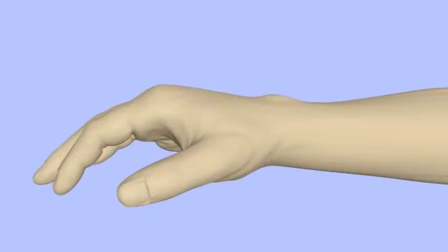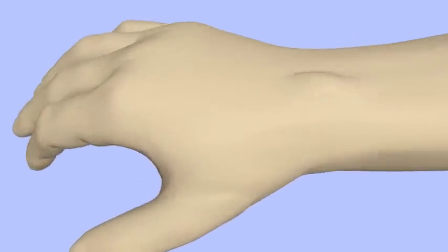Ganglion cysts are fluid-filled masses that can occur near joints and tendons. They are very common and generally harmless. They can, however, be unsightly, painful, and annoying.